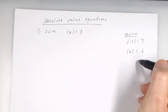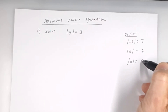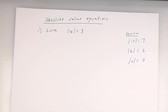The absolute value of a number is always positive because it measures the distance that number is from 0. What's the absolute value of 0? 0. So when you take the absolute value of a number and simplify, the result needs to be positive or 0. Going back to the equation, the absolute value of x equals 3 — what are the solutions? One solution is 3, because the absolute value of 3 is 3.